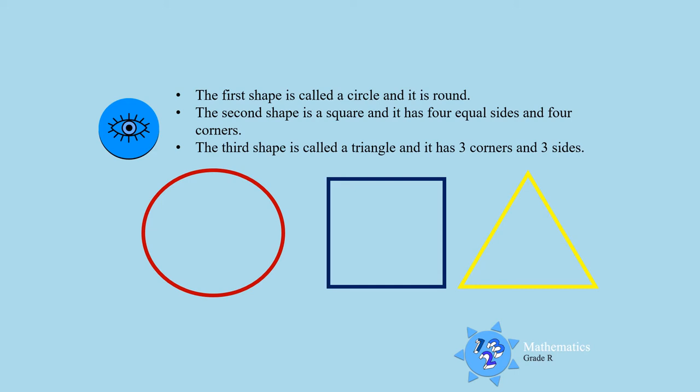Shape number one is called a circle and a circle is round. Very good! Shape number two is a square and it has four equal sides and four corners.